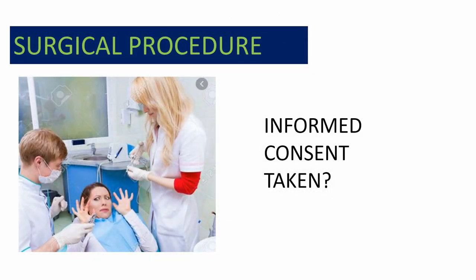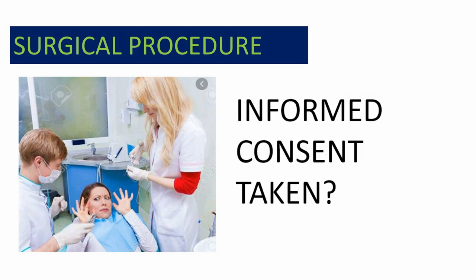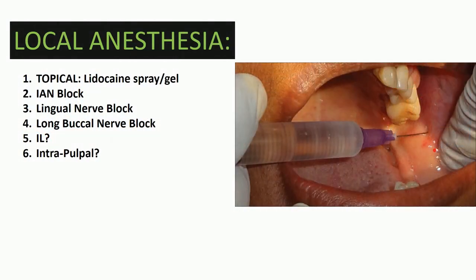The patient is prepared mentally and informed consent is taken. The patient is asked to do a mouthwash with an antiseptic like betadine. The chair, light, suction, and other instruments should be ready and sterility should be maintained throughout the procedure. Assistance at the chairside is also needed. Removal of wisdom teeth is done with local anesthesia.